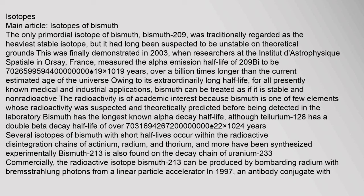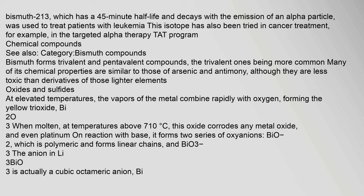The only primordial isotope of bismuth, bismuth-209, was traditionally regarded as the heaviest stable isotope, but it had long been suspected to be unstable on theoretical grounds. This was finally demonstrated in 2003, when researchers at the Institut d'Astrophysique Spatiale in Orsay, France, measured the alpha emission half-life of Bi-209 to be approximately 1.9×10¹⁹ years. Bismuth-213, which has a 45-minute half-life and decays with the emission of an alpha particle, was used to treat patients with leukemia. This isotope has also been tried in cancer treatment, for example in the targeted alpha-therapy (TAT) program.